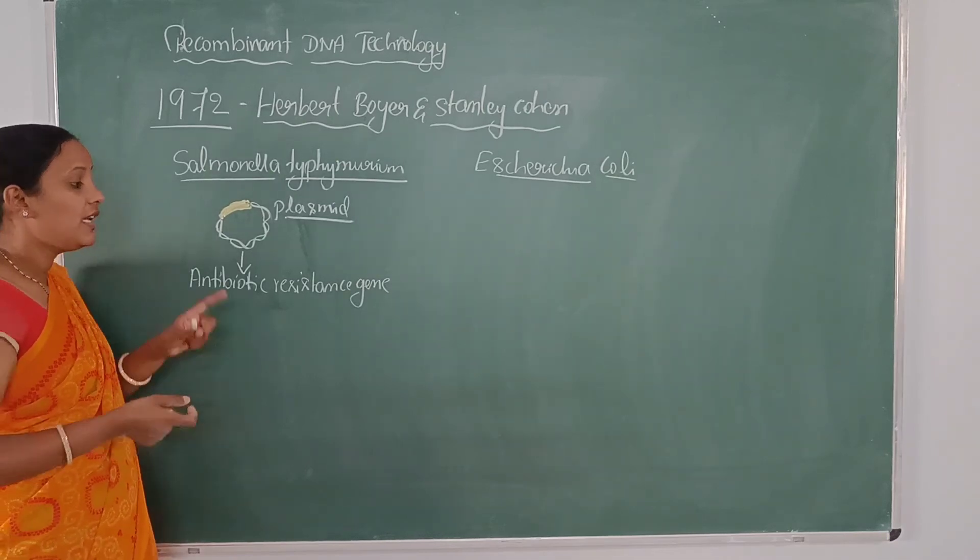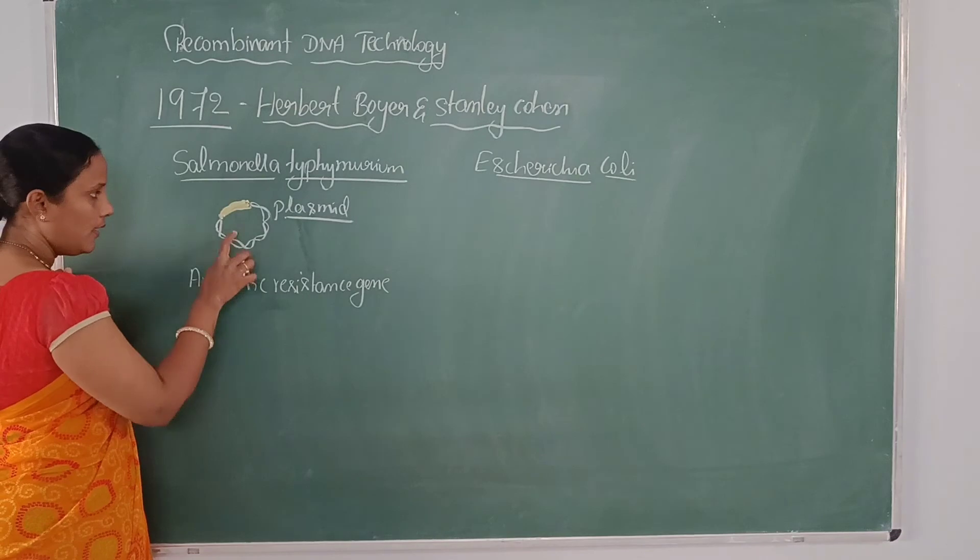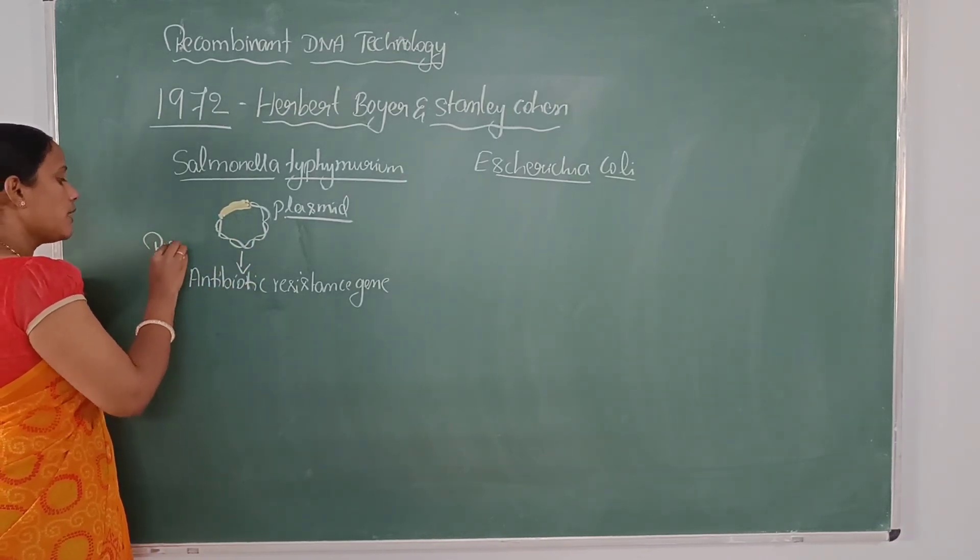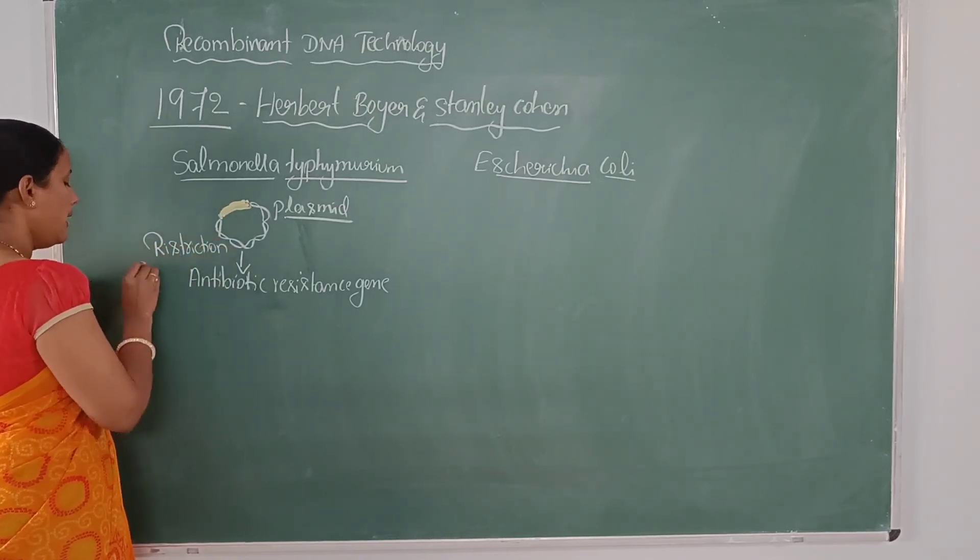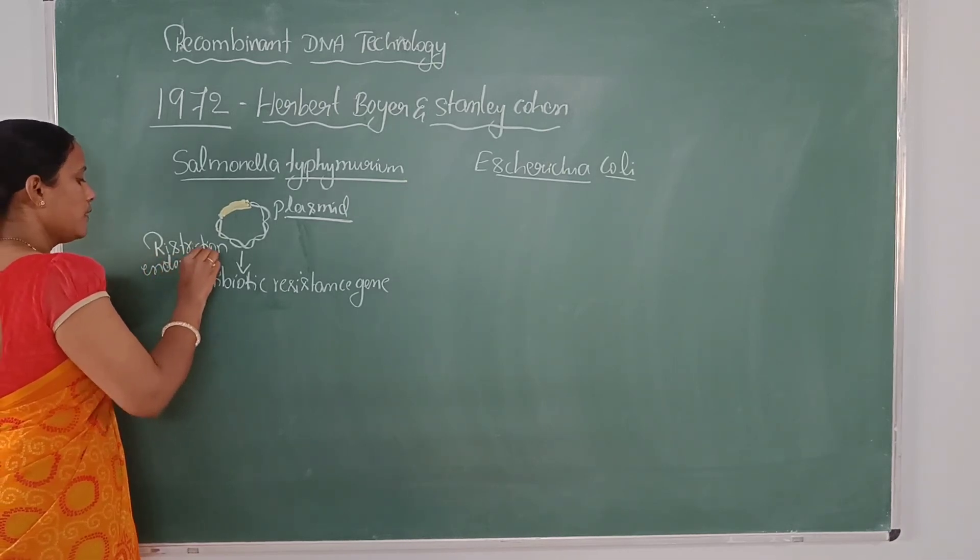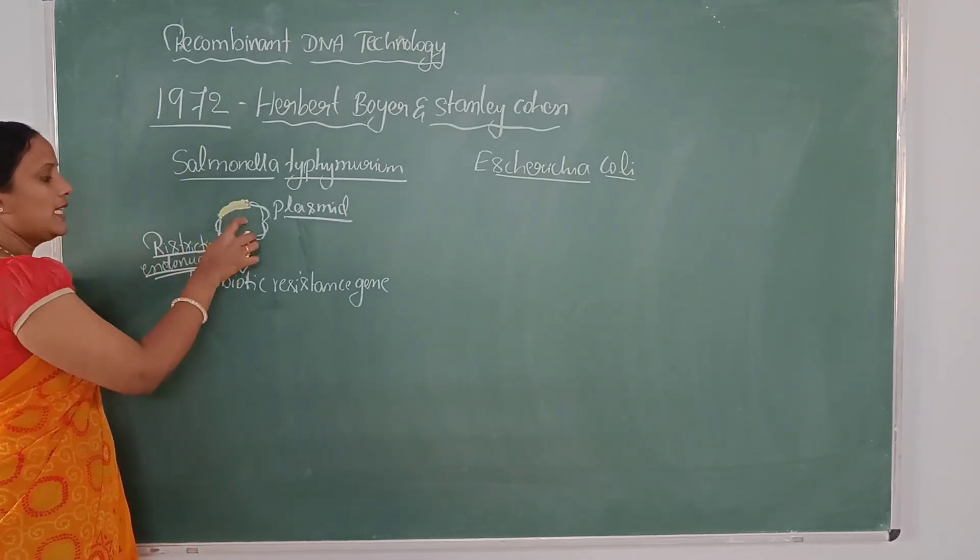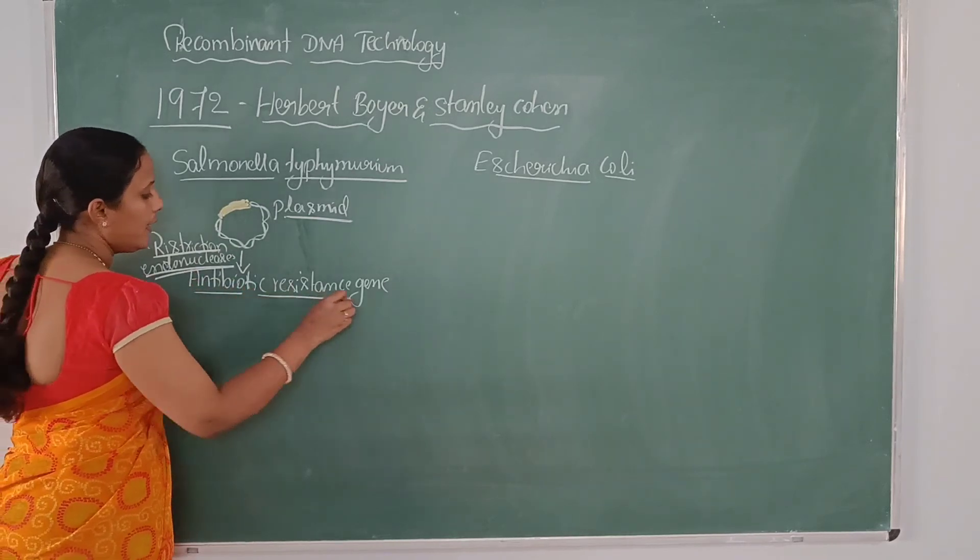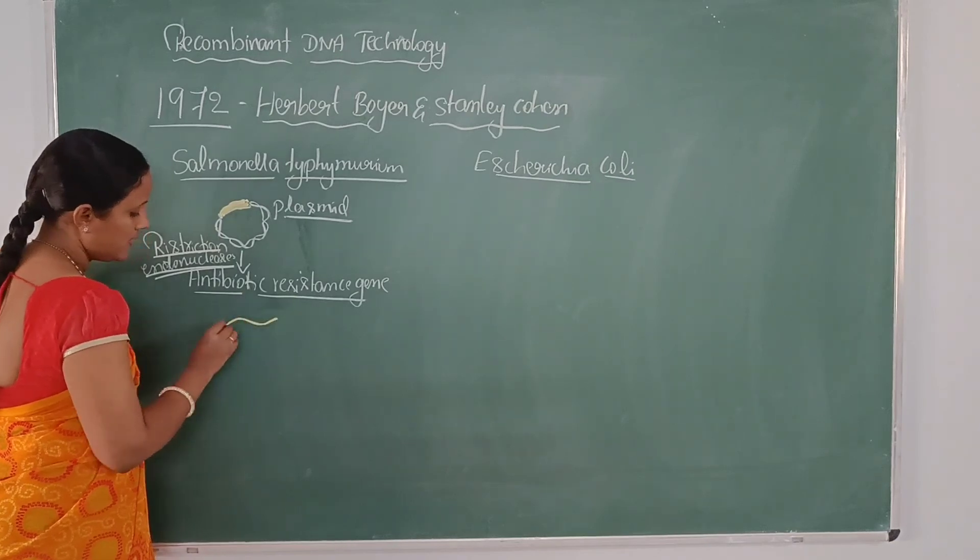For doing that, there is a use of enzyme. How they separated it? By treating with the enzymes called restriction enzymes or restriction endonucleases. They treated the plasmid with restriction endonucleases and isolated the antibiotic resistant gene.